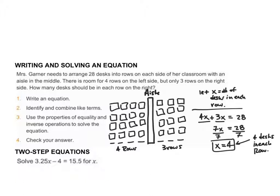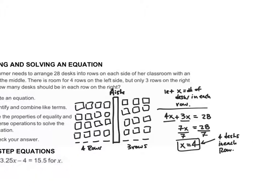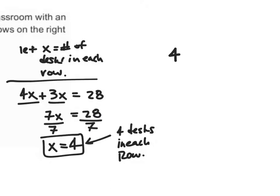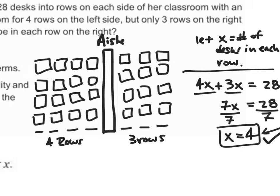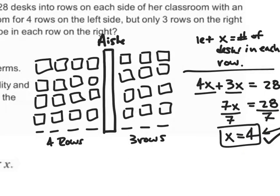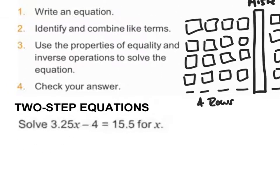Let's verify that we found the right answer algebraically. I'll plug in: 4 times 4 plus 3 times 4, does that give us 28? 4 times 4 is 16, plus 3 times 4 which is 12. 16 plus 12 is 28, and 28 is equal to 28 — that is true, so we have solved this correctly. Turning a problem like this into an equation is a skill we want you to develop.